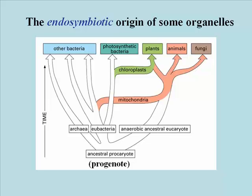Mitochondria and chloroplasts make their own proteins independent of the nucleus and cytoplasm of the cell that contains them. This suggested an endosymbiotic theory for the origin of these organelles, in which primitive eukaryotic cells ingested either a bacterium or a blue-green algal cell, but for some reason failed to digest them.